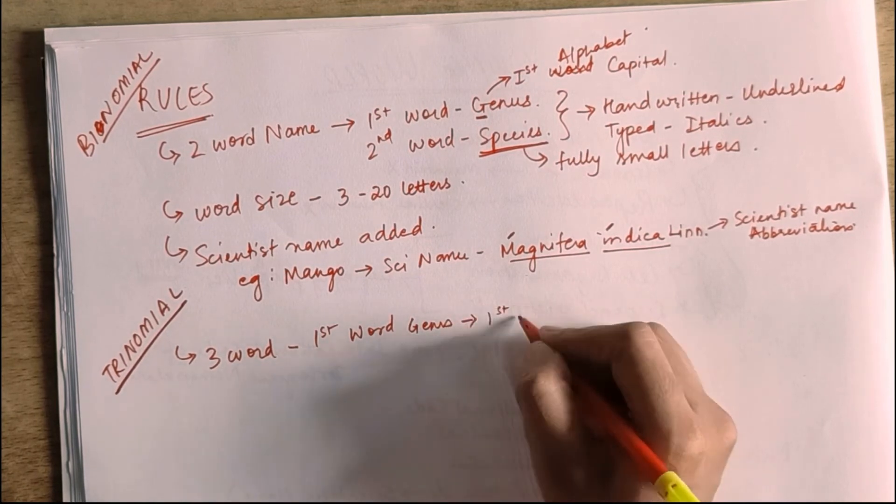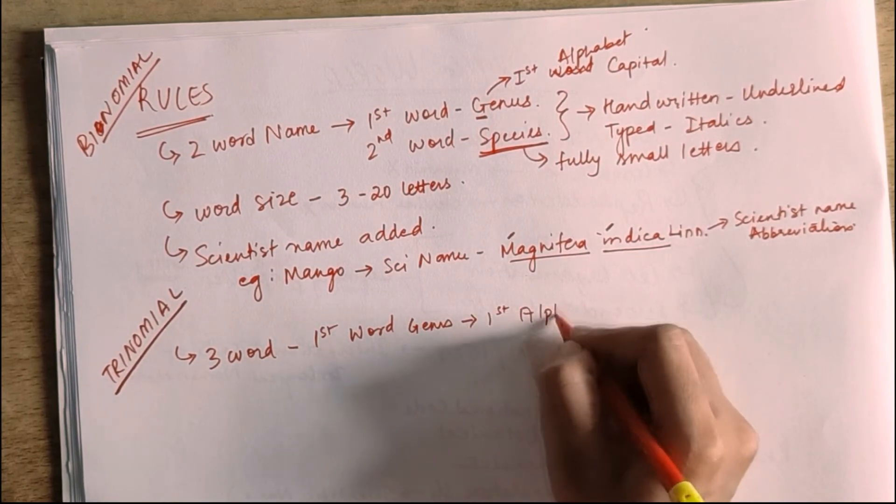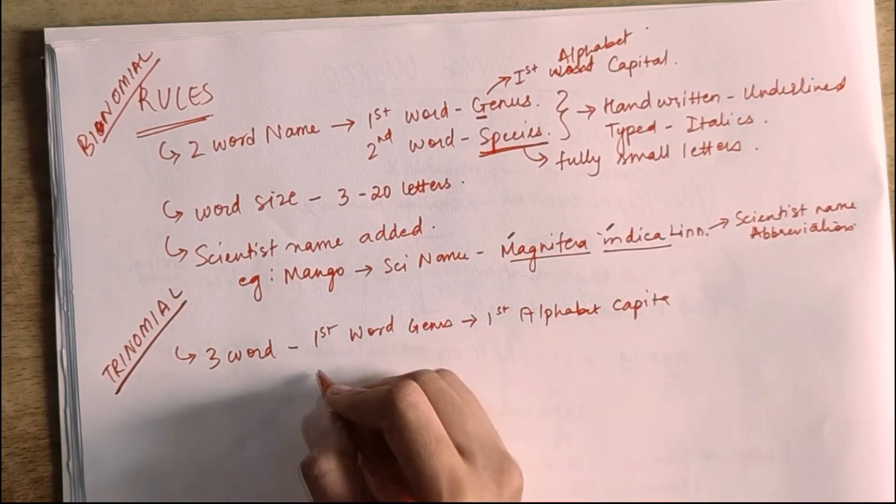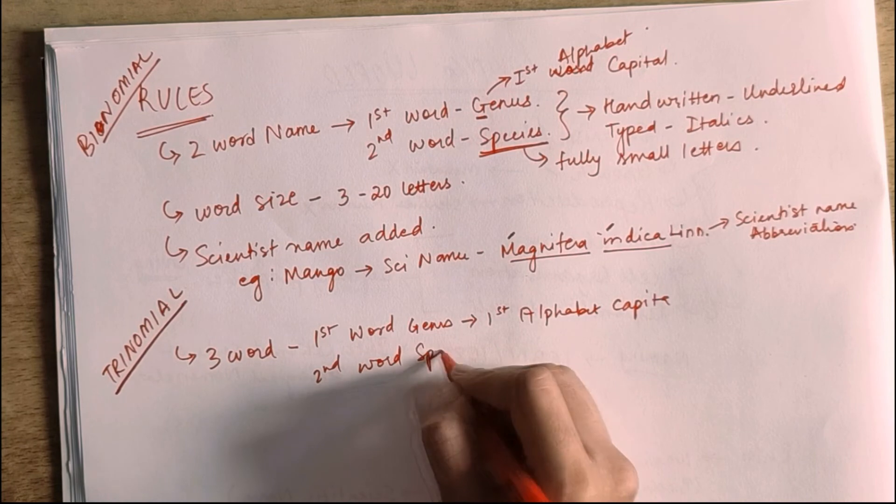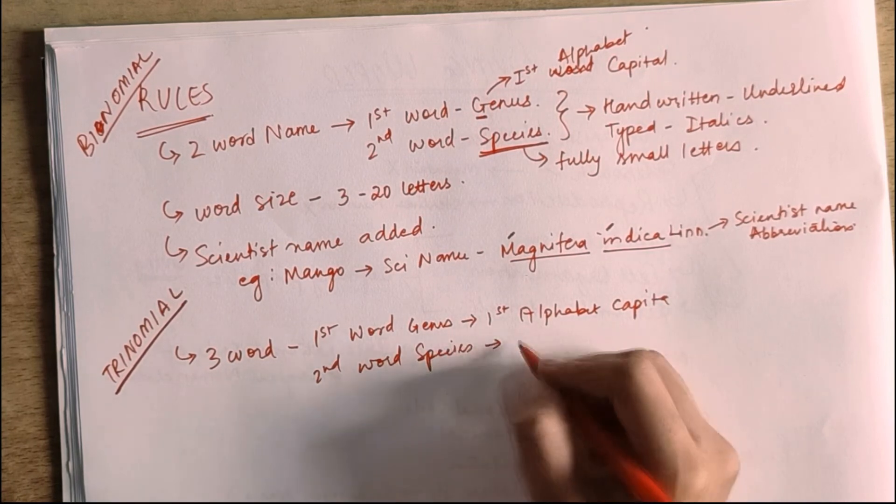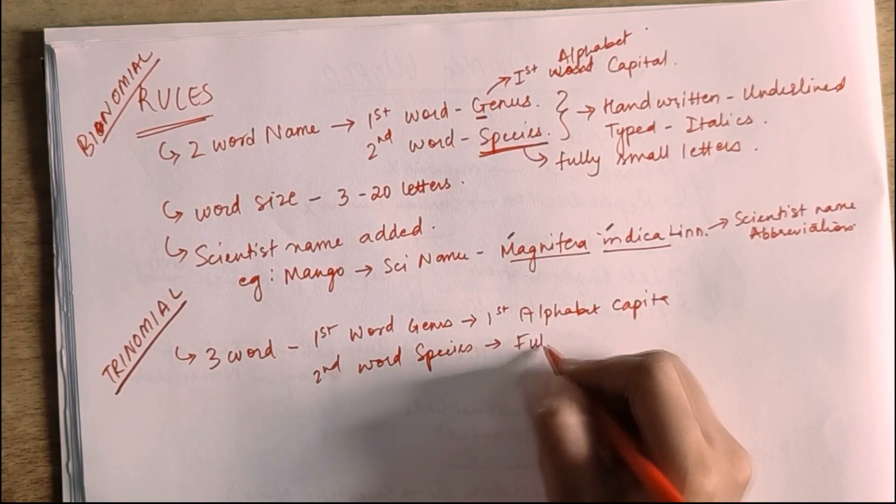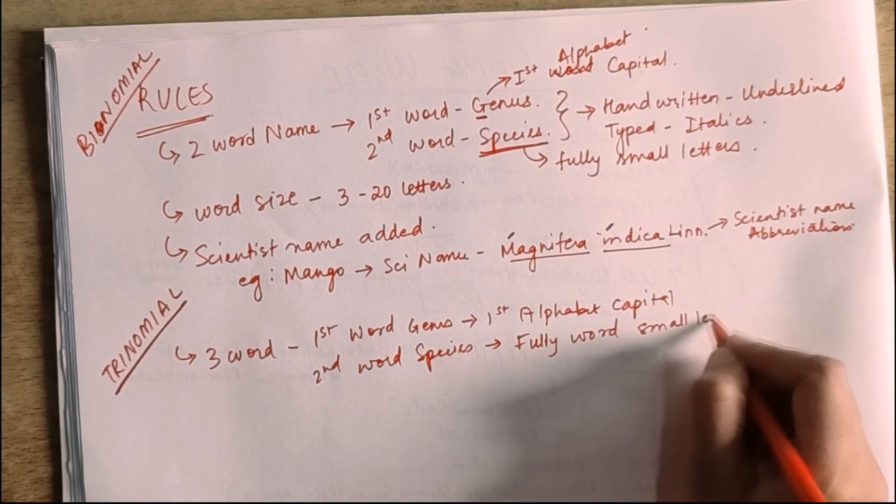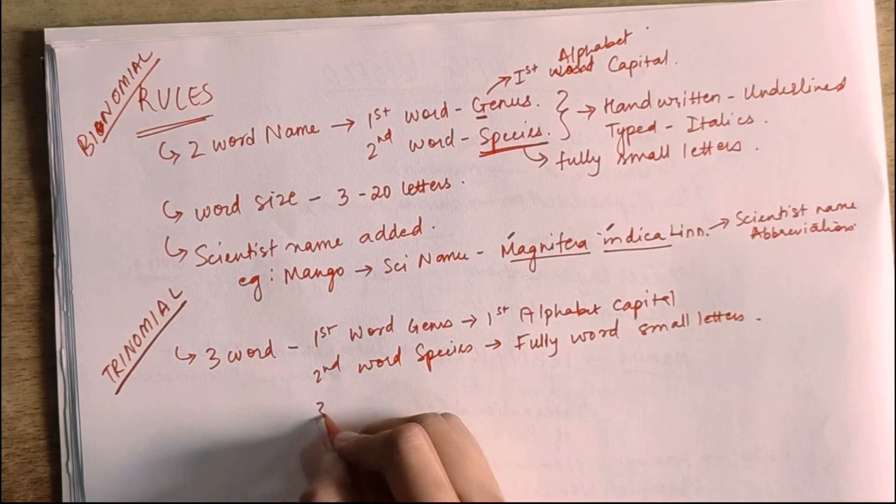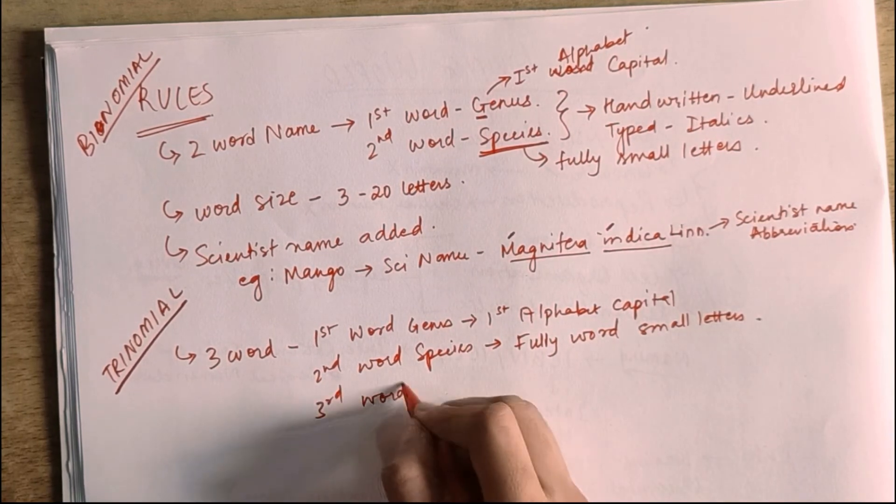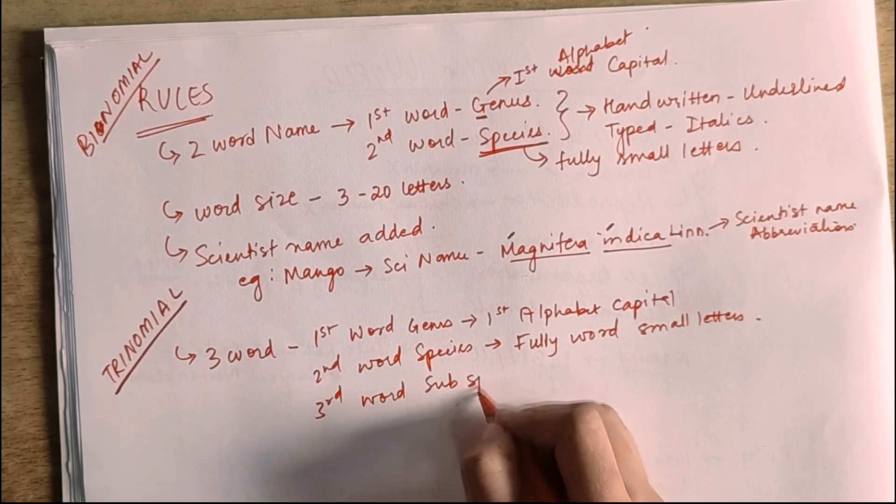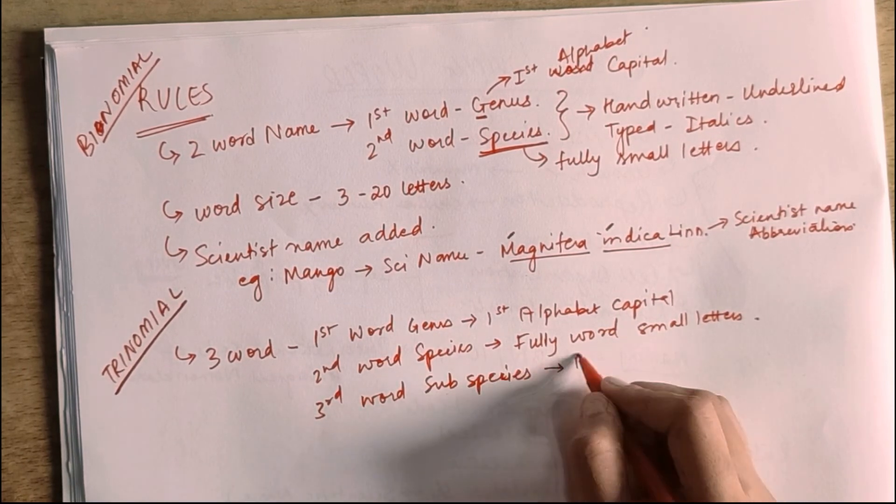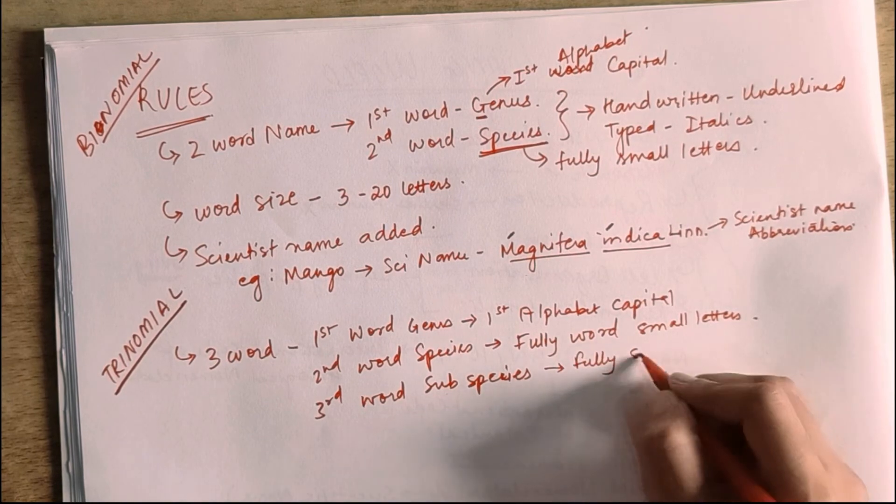The first letter is capital, the first alphabet is capital. The second word is species. In this, there is full word in small letters. And third word is subspecies, and this is fully small letters.